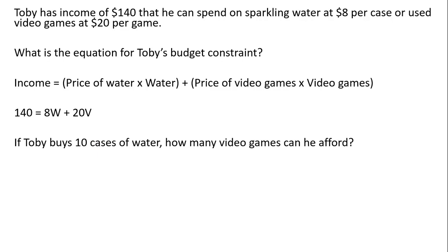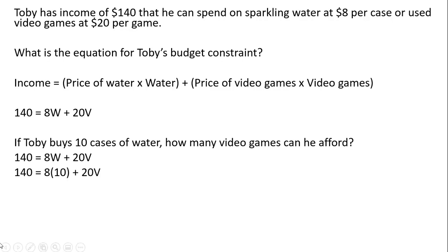If Toby buys 10 cases of water, how many video games can he afford? We're just going to plug 10 back into Toby's budget constraint and solve for V, the number of video games. W now takes on a value of 10, and we're going to solve for V. Subtracting 80 from 140, 60 equals 20V. And then 60 divided by 20: Toby could afford three video games if he buys 10 cases of water.